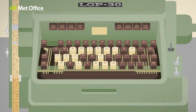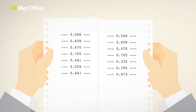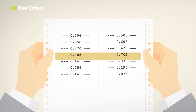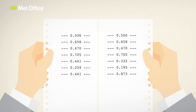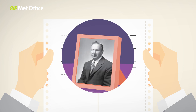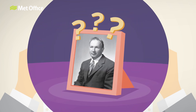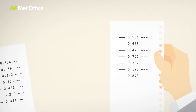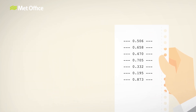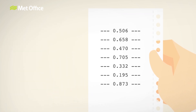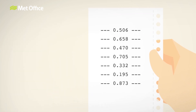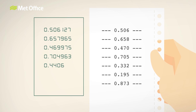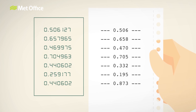The result was an entirely different weather forecast, bearing no resemblance to the outcome from his previous simulation. Initially confused, Lorenz soon realised that the only difference was that the numbers on the printout were shortened to three decimal places, whilst the numbers in the computer memory retained six decimal places.